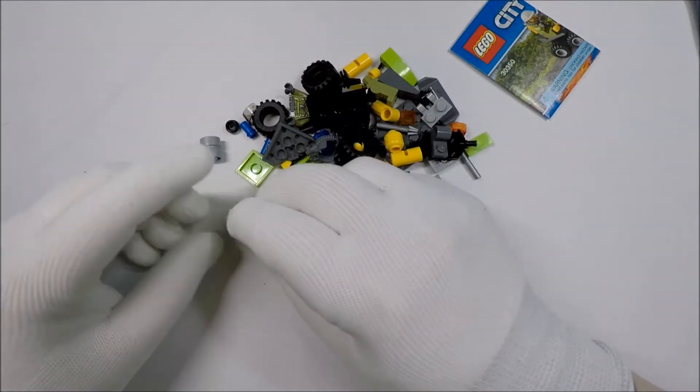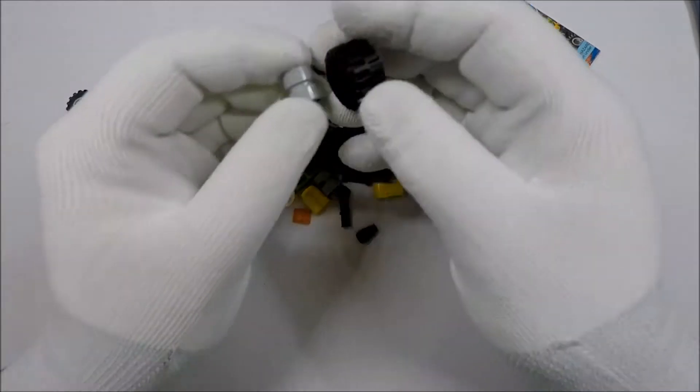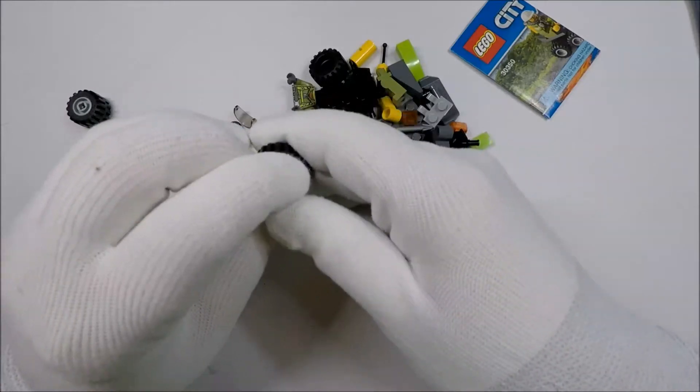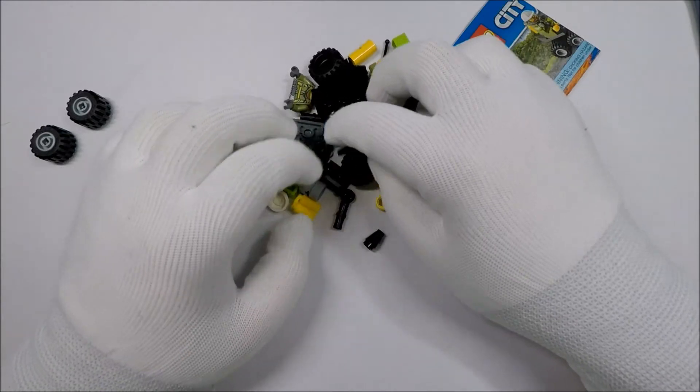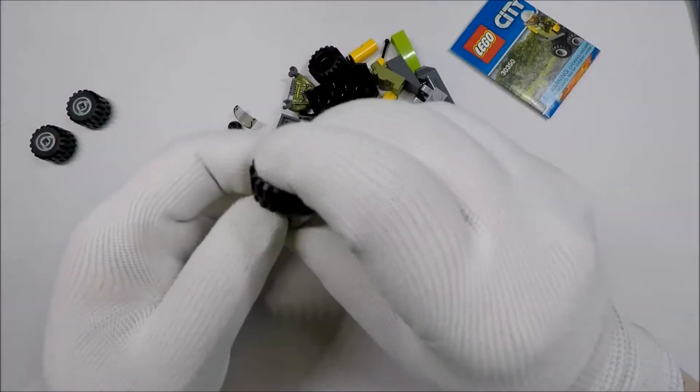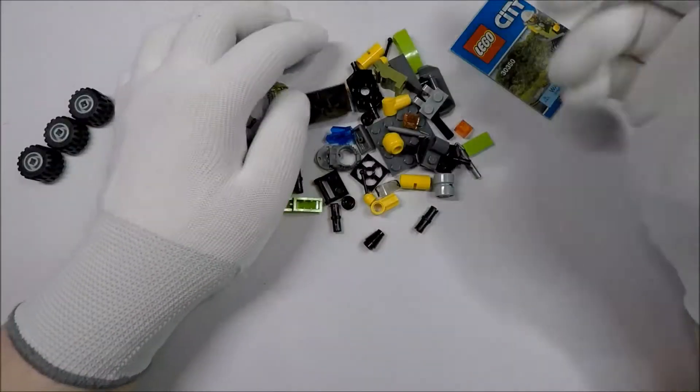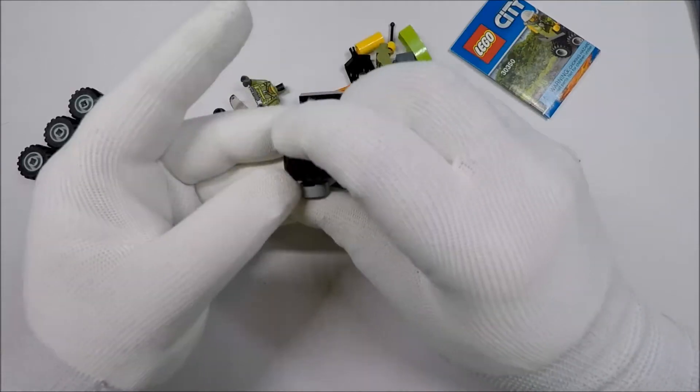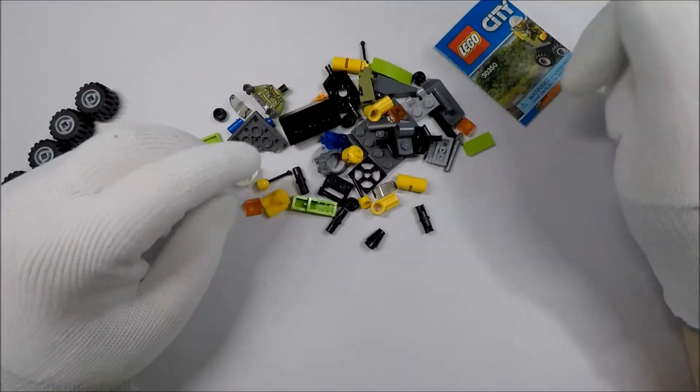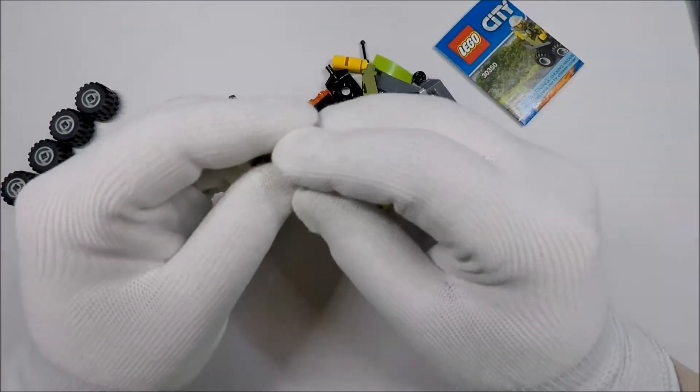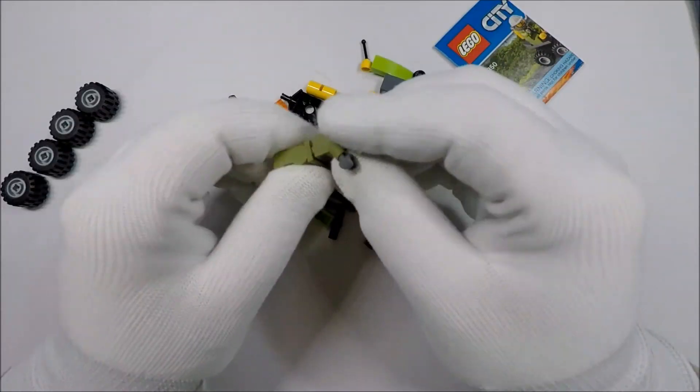If you want to check in the description, there is a link to where you can find this particular set on Amazon and on Bricklink, and there's also a link to the Brickset description for this particular set. Brickset is a site that has a pretty thorough guide to all the various Lego sets.